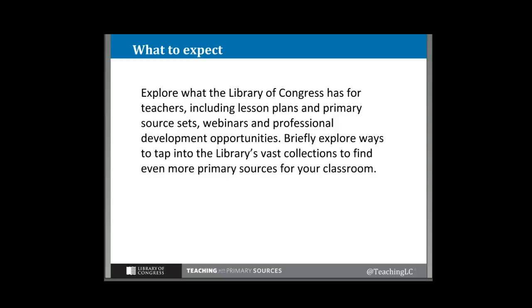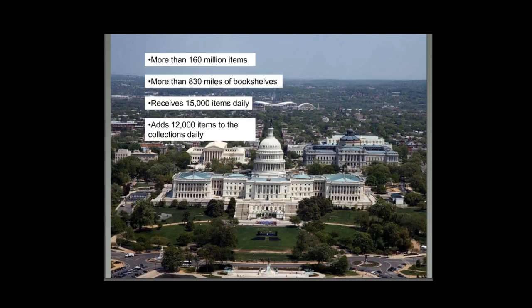We'll explore briefly ways to tap into those vast library collections to find even more. What I've put on screen now is Capitol Hill, and you can see the Capitol there in the foreground. Behind it and just to the right on the screen, there's a domed building — the very beautiful Thomas Jefferson Building, completed in 1897. There are two other buildings on Capitol Hill in addition to the Jefferson Building that comprise the Library on Capitol Hill. We also have some off-site storage.